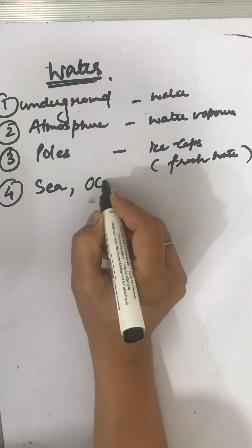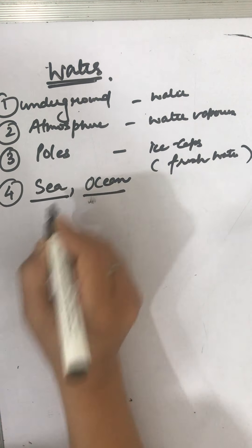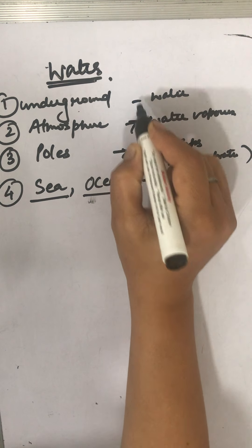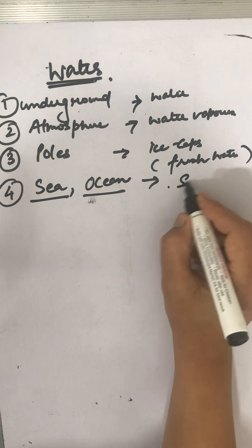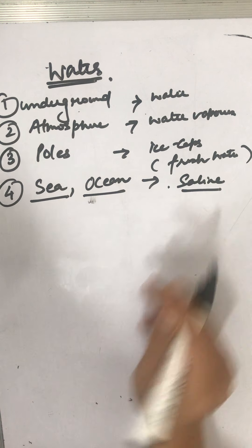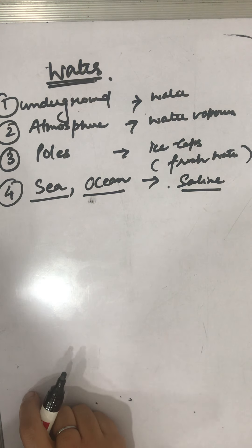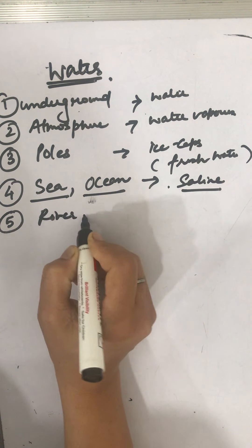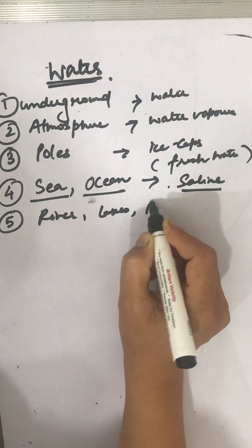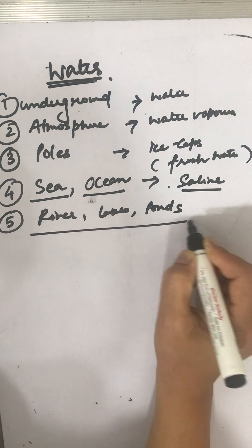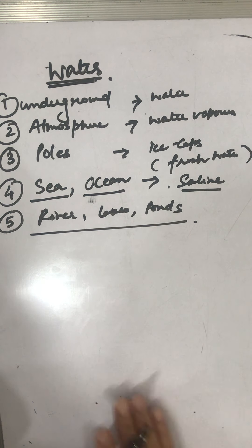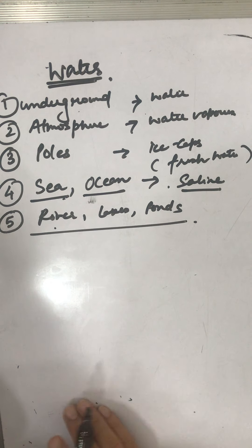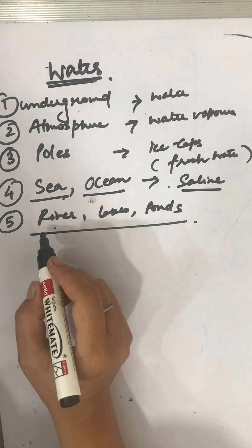It is also available in sea and ocean. Here the amount of water has more amount of salt added into it, and we call it saline water. Then it is also in rivers, lakes, and ponds. Availability of water, fresh water, varies from place to place.